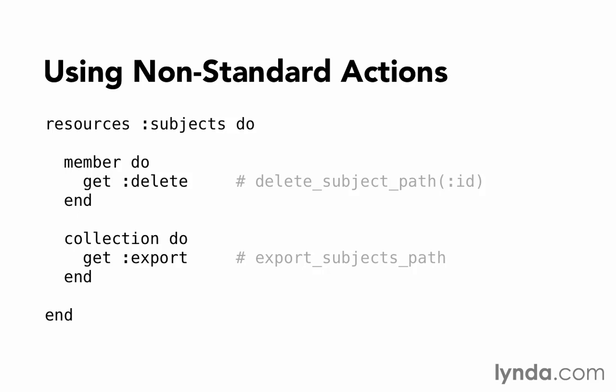In addition to having a block for `member`, we could have another block for `collection`, and inside there we can list off the actions which would be performed on the entire collection of objects — so we're not talking about a single one, we're talking about all of them. For example, we might decide to create an action called `export`, which will allow us to export all of our subjects from our database. To do that, inside the collection block we would define `get export`. It'd be a get request since we're asking to get data back, and the helper method it would give us would be `export_subjects_path`. Notice that it's plural — we wouldn't be exporting a subject, we're exporting all of the subjects.